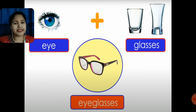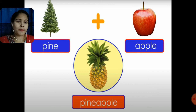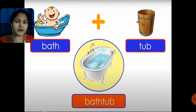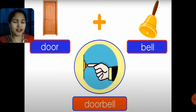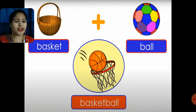Star plus fish gives starfish. Egg plus plant gives eggplant. Eye plus glasses gives eyeglasses. Hot plus dog gives hot dog. Pine plus apple gives pineapple. Bath plus tub gives bathtub. Door plus bell gives doorbell.